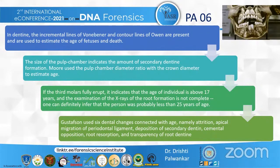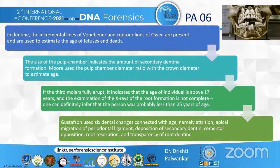There is an indirect relation between the size of the pulp chamber and the size of the crown. When the child is young, the pulp chamber is comparatively wider but becomes smaller as the individual ages — the pulp chamber decreases while the crown size increases. If the third molars are fully erupted, that indicates the individual is above 17 years of age. If X-ray examination shows root formation is not complete, one can infer the person was probably less than 25 years of age. Gustafsson used six dental changes correlated with age: attrition, apical migration of the periodontal ligament, deposition of secondary dentine, cemental apposition, root resorption, and transparency of root dentine.